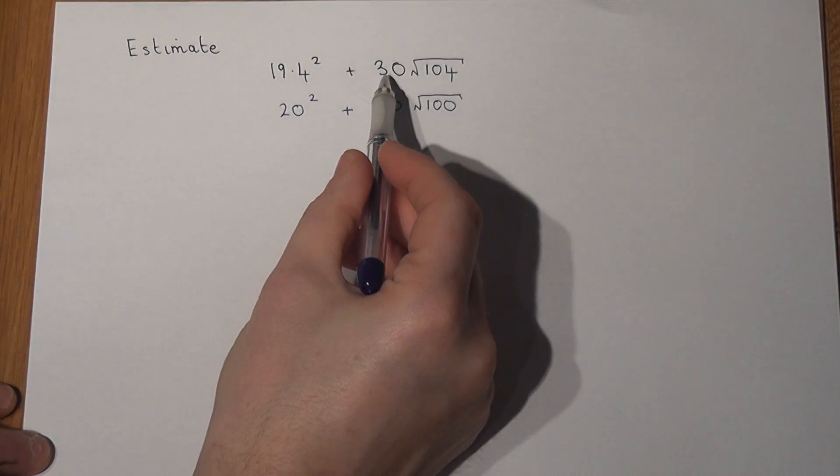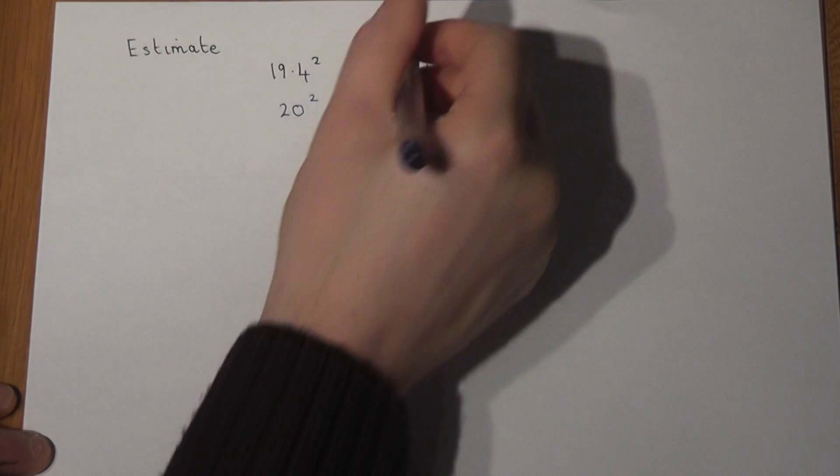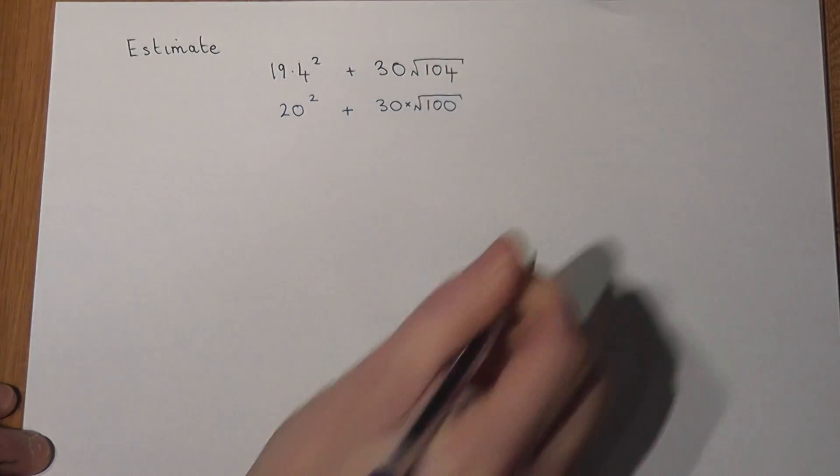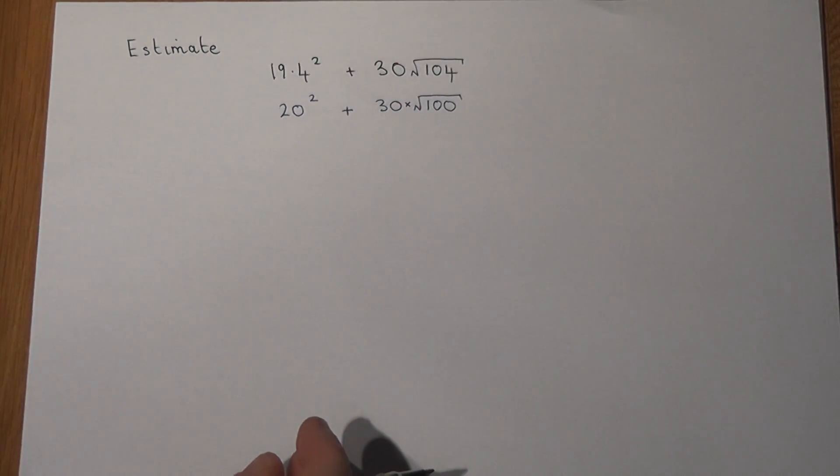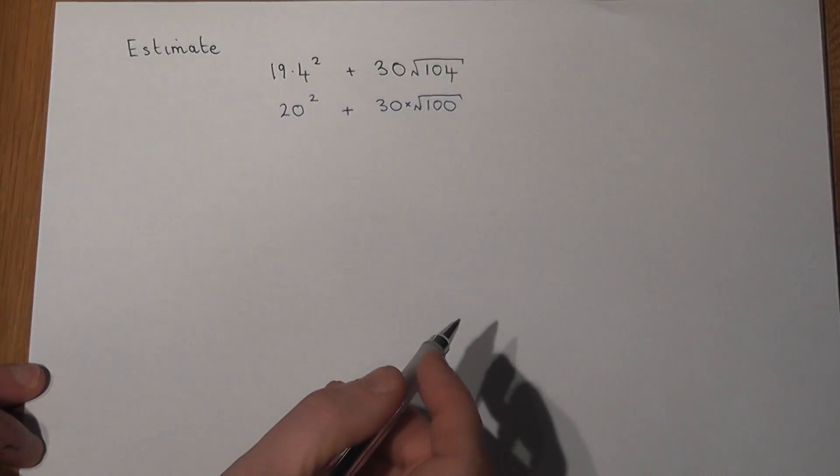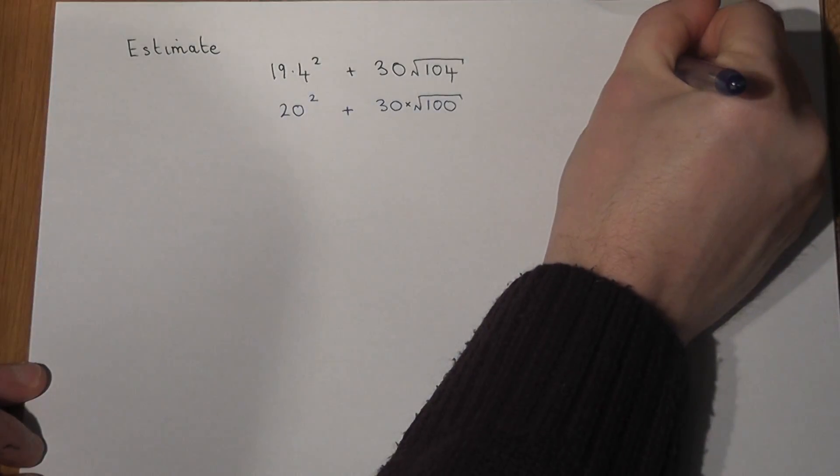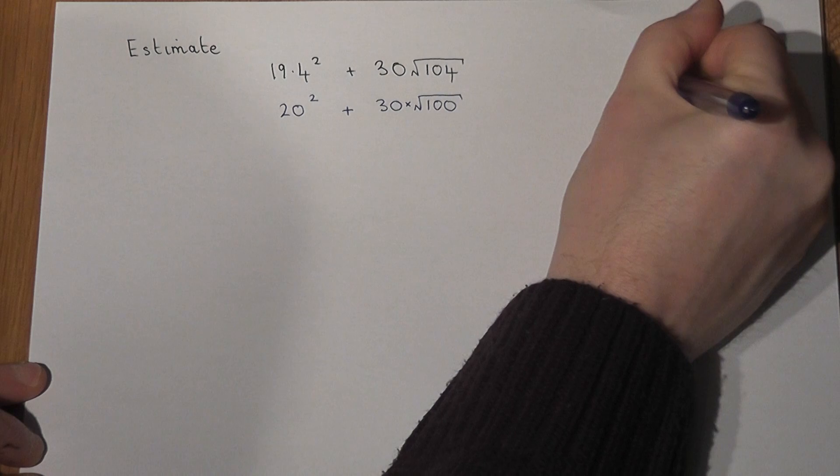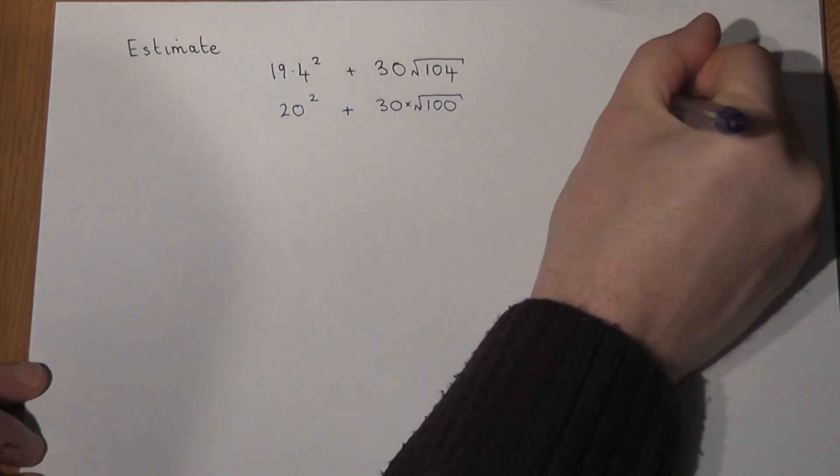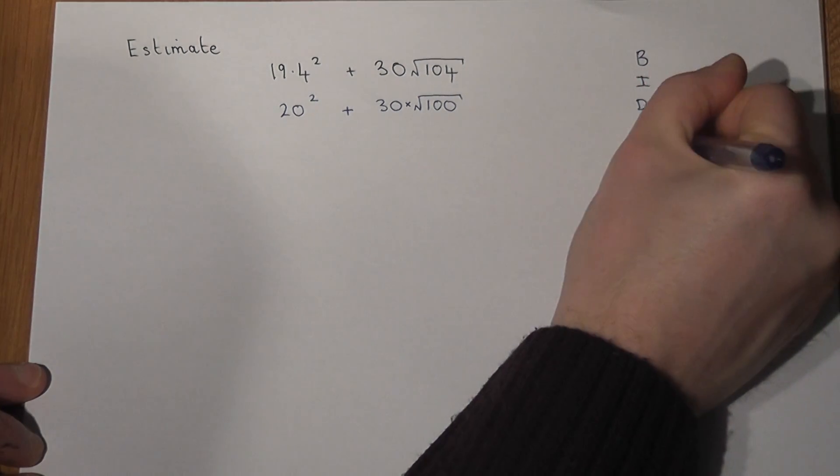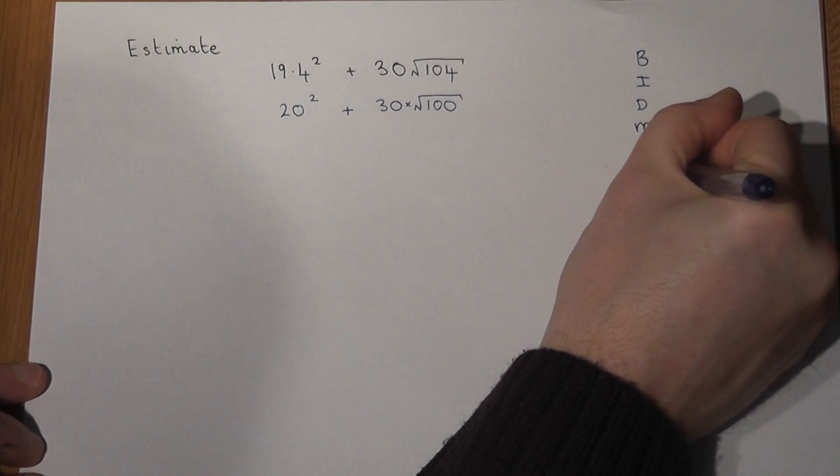Now BIDMAS then tells us how to work the order out in the correct way, and it basically says you do brackets first, then we do indices or powers, then we divide, then we multiply, then we add, then we subtract. And it's a rough rule to use to evaluate more complex expressions correctly.